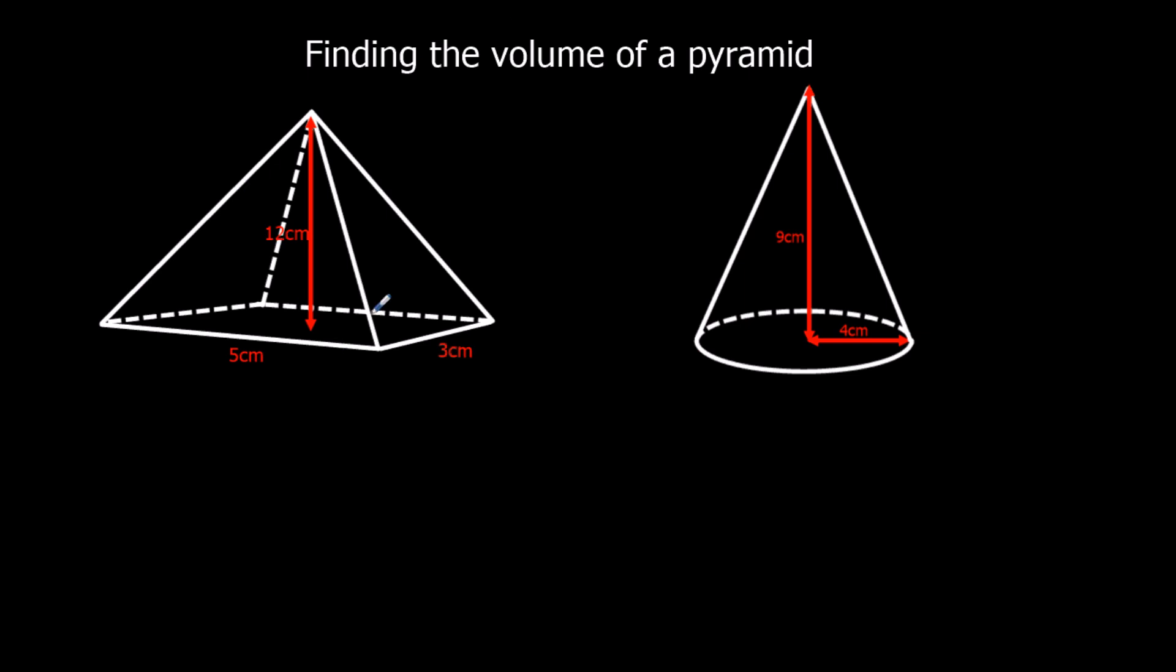Okay, so the square-based pyramid, we're going to do one third of three times five times twelve. So, well, a third times three is actually one, times five is five, times twelve, that's sixty. So it's going to be sixty centimeters cubed.